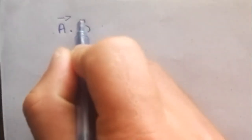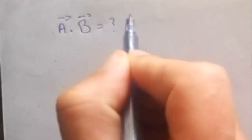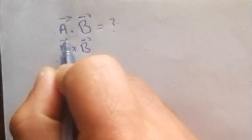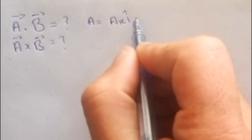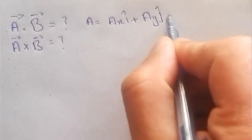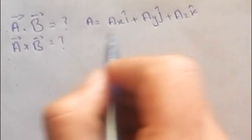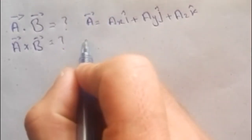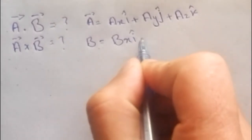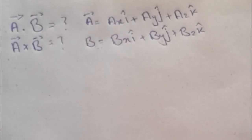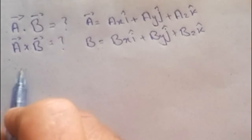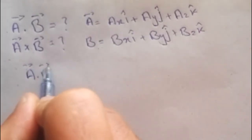Let's discuss the dot product and cross product between two vectors. Suppose we have two vectors a and b, where a dot b is the dot product and a cross b is the cross product. Vector a is equal to ax·i plus ay·j plus az·k, where i, j, and k are the unit vector components. Vector b is equal to bx·i plus by·j plus bz·k.